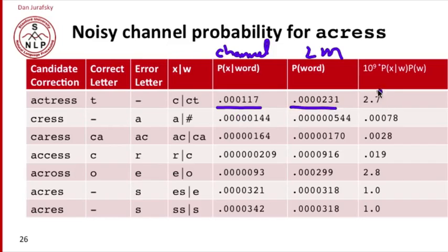We have the channel model: how likely was CT to be errorfully turned into C, so T to be deleted. And how likely is the word actress anyway? We can just multiply these together. Because these are very small numbers, we'll multiply everything by 10 to the ninth to make it readable. You can see that the most likely word here is across. With this particular channel model and language model, the most likely word is across. But actress is also quite likely. And acres seems a reasonable likelihood. The word cares, which is just a very rare word, is a very low probability and has an unusual error. So the noisy channel model likes the word across as the possible replacement.